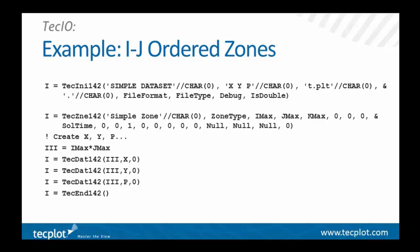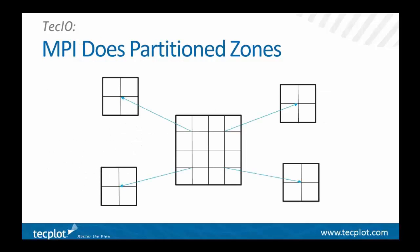You'll notice each of these calls returns an integer value — they'll all return zero if successful and some non-zero number otherwise. The particular non-zero value won't be meaningful to you, but if you're getting one, it could help tech support identify the problem. Also, setting the debug parameter in TechINI to 1 will give you some diagnostic output to your console. We also now have a parallel version of our library based on MPI — the message passing interface — specifically to support partitioned zones. It supports unpartitioned zones as well, writes only SISL files, and because we don't yet support polyhedral data in SISL, you won't be able to write polyhedral data using this library. But any other zone type you can write using the MPI library.